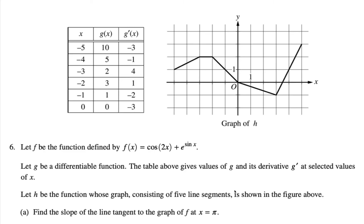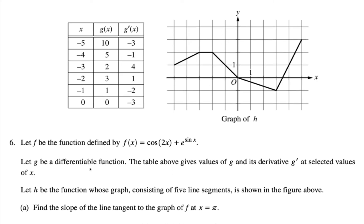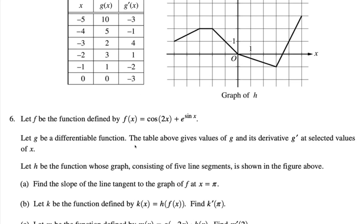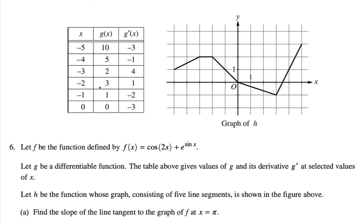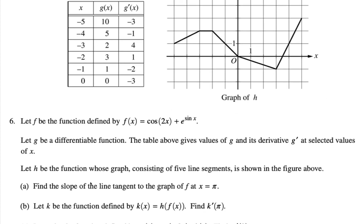Let's look at 2017 number 6. So let f be the function defined in this way, and let g be a differentiable function. The table gives the values of g and g prime. Now h be the function whose graph consists of five line segments here. Now, find the slope of the line tangent to the graph of f at x equals pi.